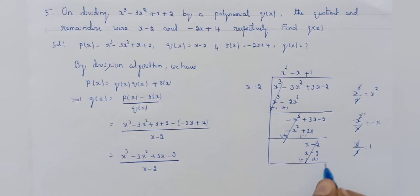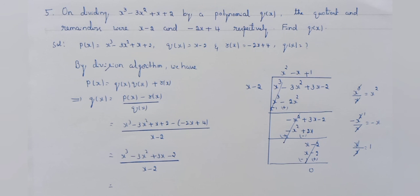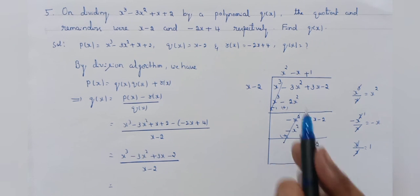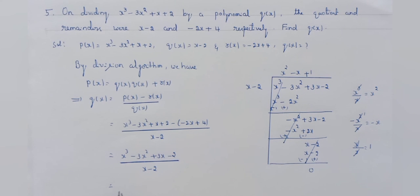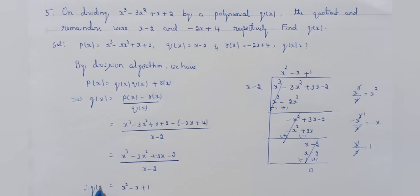The remainder is 0. So when you divide x cube minus 3x square plus 3x minus 2 by x minus 2, the quotient is x square minus x plus 1. Therefore g of x is x square minus x plus 1.